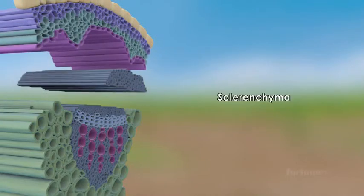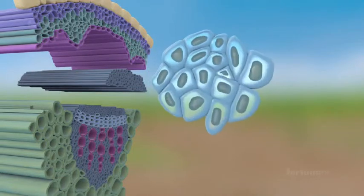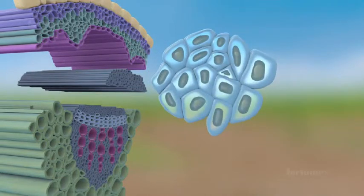Sclerenchyma is a dead tissue. The cytoplasm in its cells will disintegrate while the cell wall thickens with lignin.